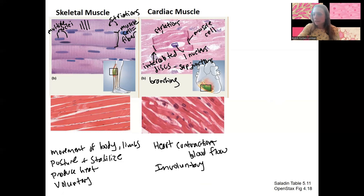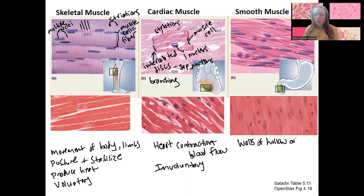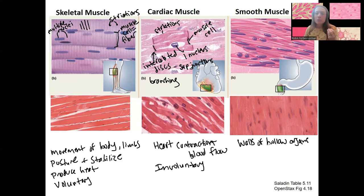Smooth muscle is the last type, and it is located within the walls of hollow organs. For example, within the stomach, there's also a sphincter and the small intestine. Digestion is a big one — the entire digestive tract, including your esophagus, is a muscular tube. Other sphincters include those at the rectum and between all the different digestive organs, and smooth muscle is also involved in the release of secretory fluids from some glands.